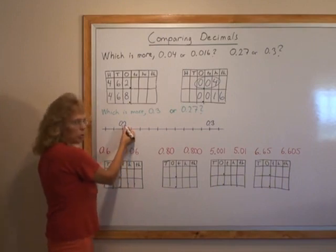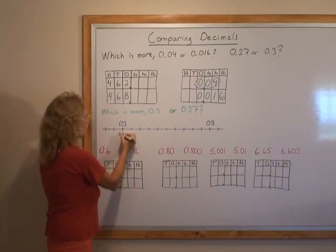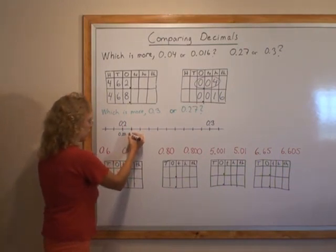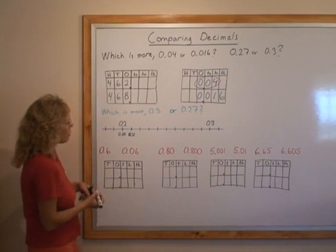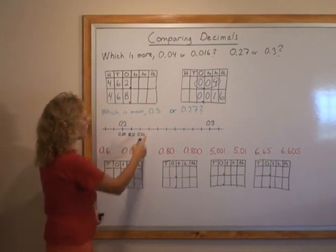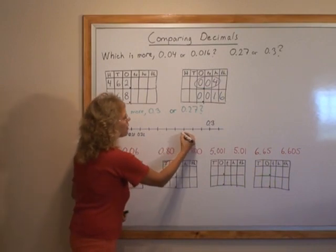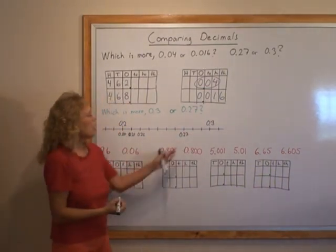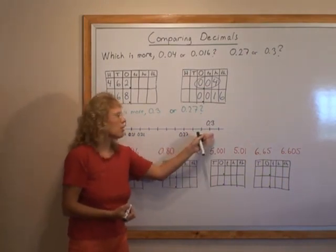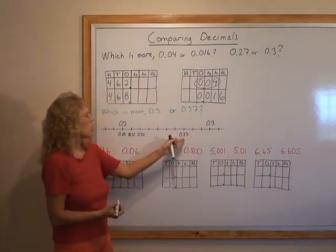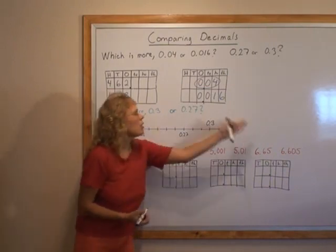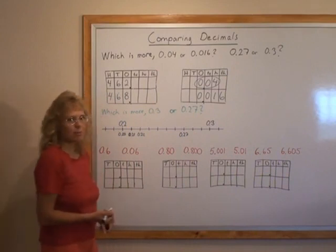And then this next one is one hundredth more or 0.21, 21 hundredths. And here's 22 hundredths. And then 23, 24, 25, 26, 27. Here's 27 hundredths. And we see on a number line, it is smaller than 0.3 or 3 tenths because it is closer to zero. Any number more to the right is more or a bigger number.